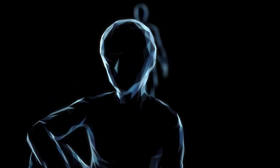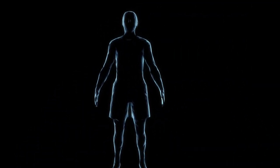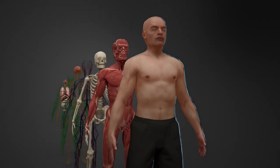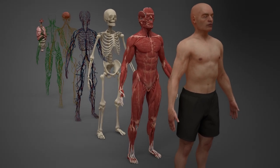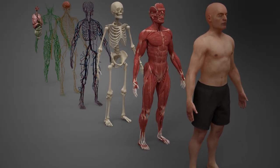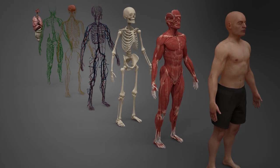The adult human being consists of an estimated 30 trillion cells. From a single cell, humans have countless cells for skin, muscles, bones, blood vessels, nerves, lymph, and organs.